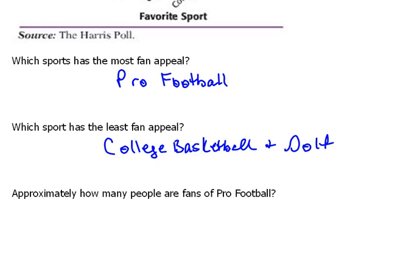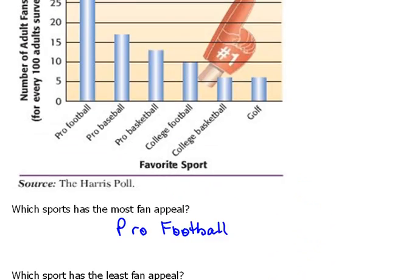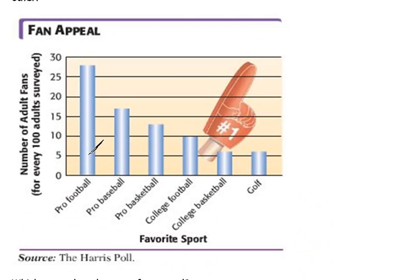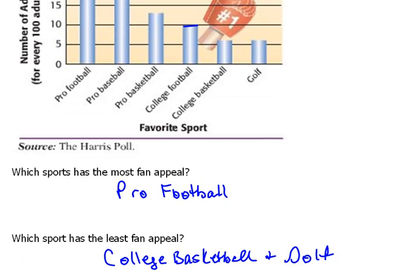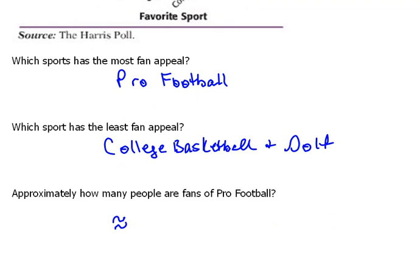Our last question says: approximately how many people are fans of pro football? We need to look back at our graph. Here's our pro football, and it looks like it's somewhere between 25 and 30. This is one of the disadvantages of using bar graphs — it's very hard to be precise. If we were talking about college football, that looks like it goes up exactly to the line that represents 10 people. But when you're in between lines it's kind of hard to guesstimate. So for this one I would say somewhere between 25 and 30 — maybe 27 or 28. So approximately, and approximately is these two little squiggly lines, 27 or 28 people.